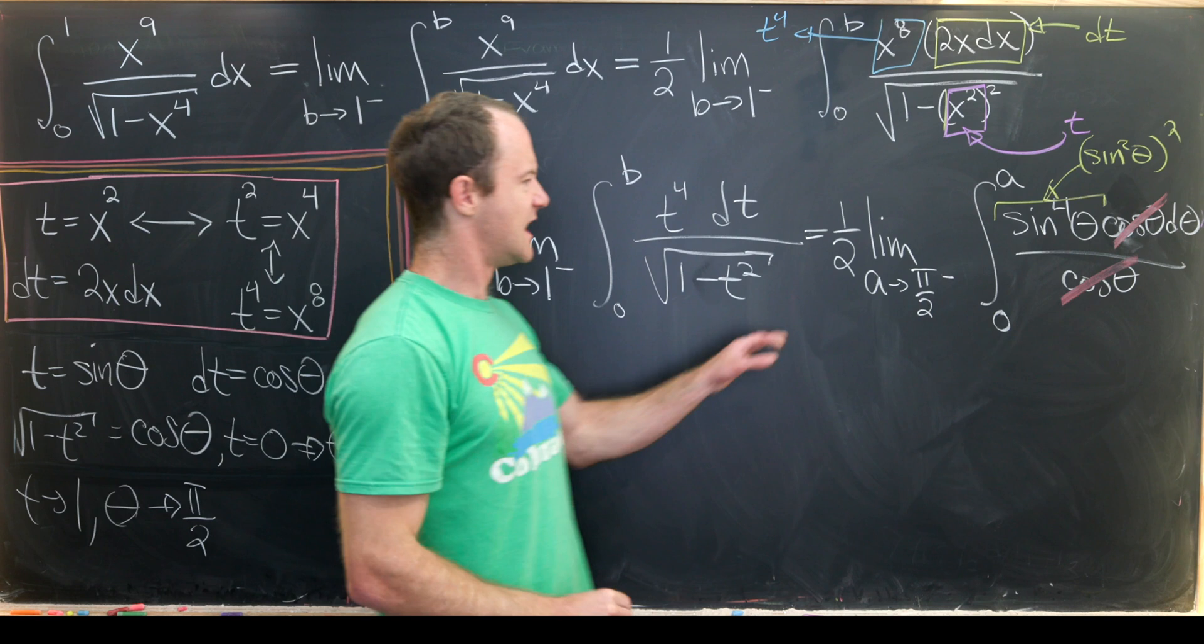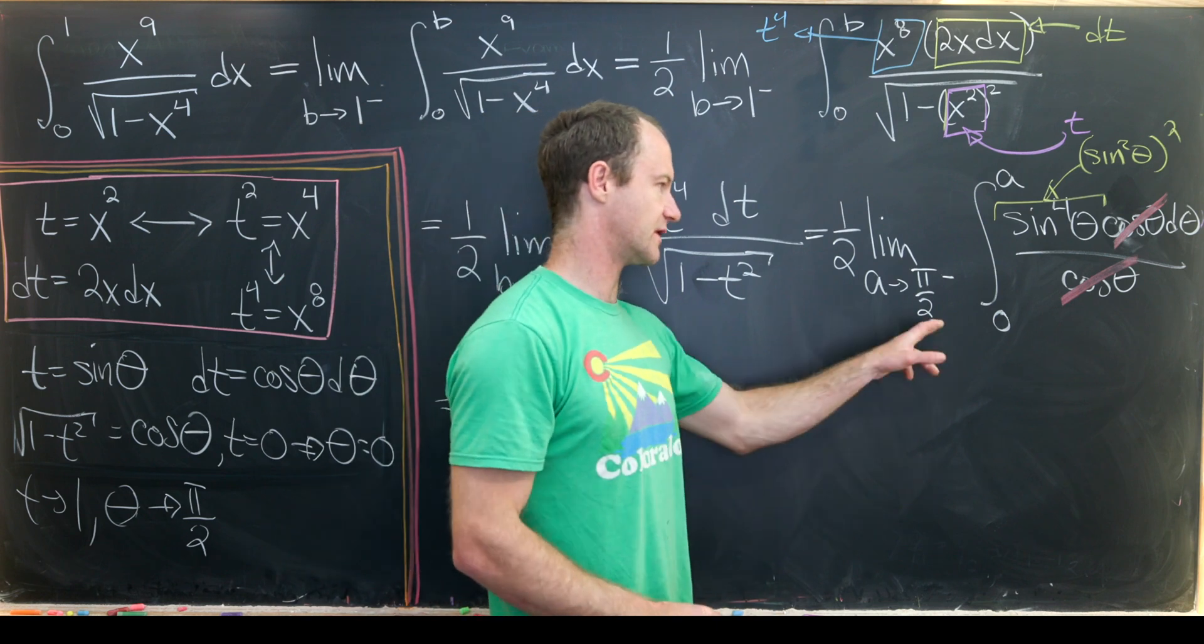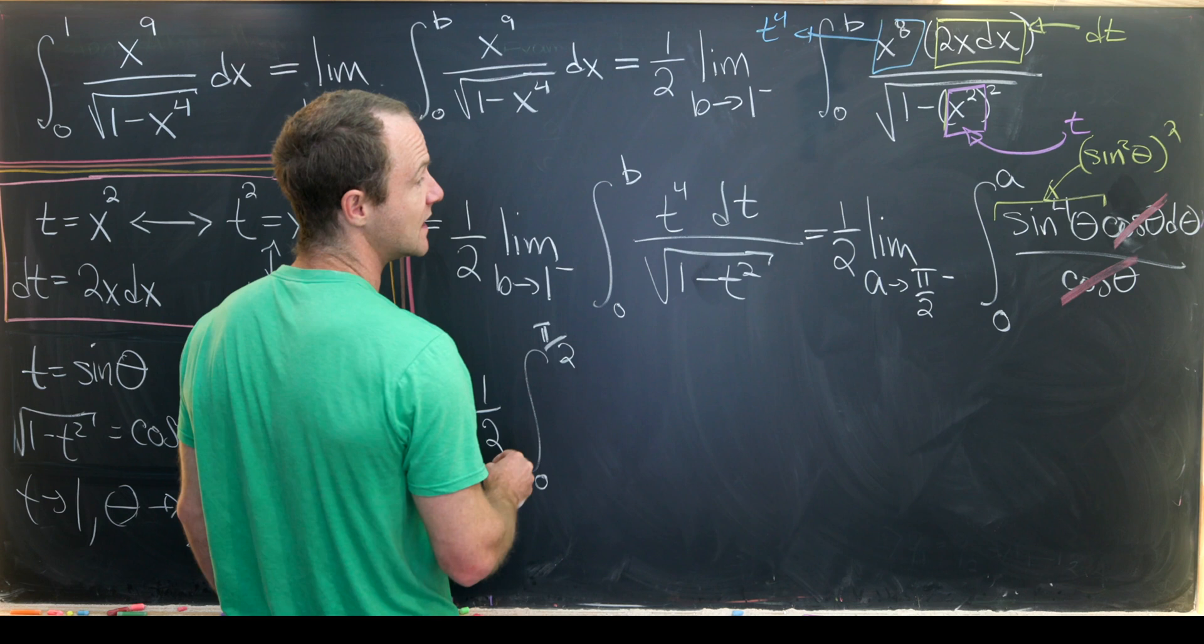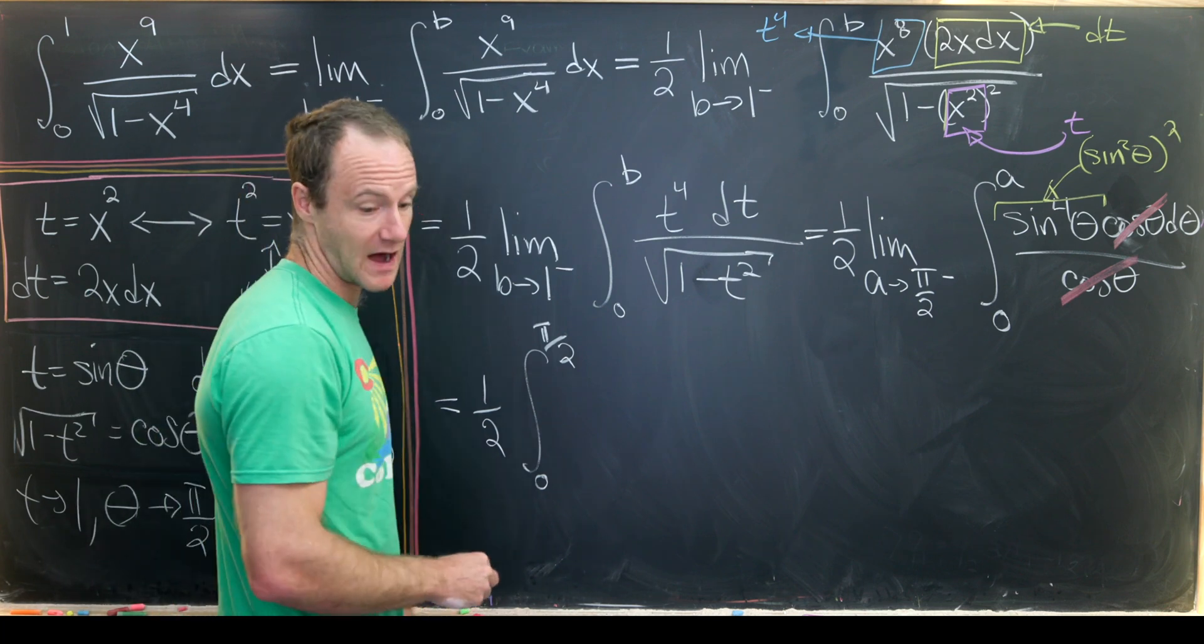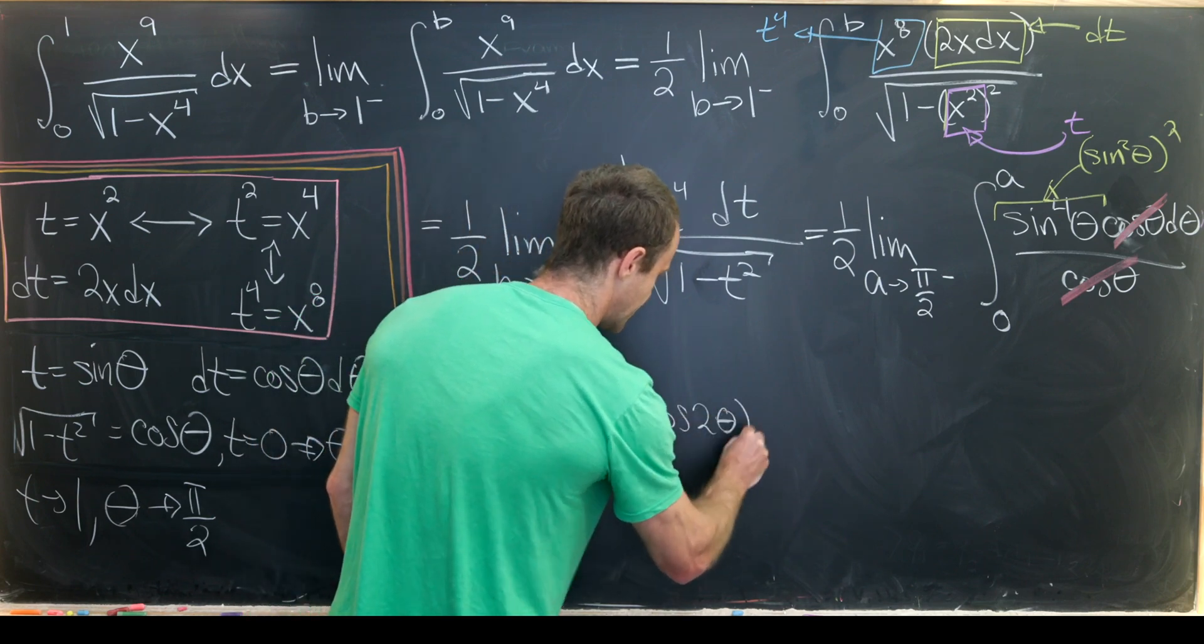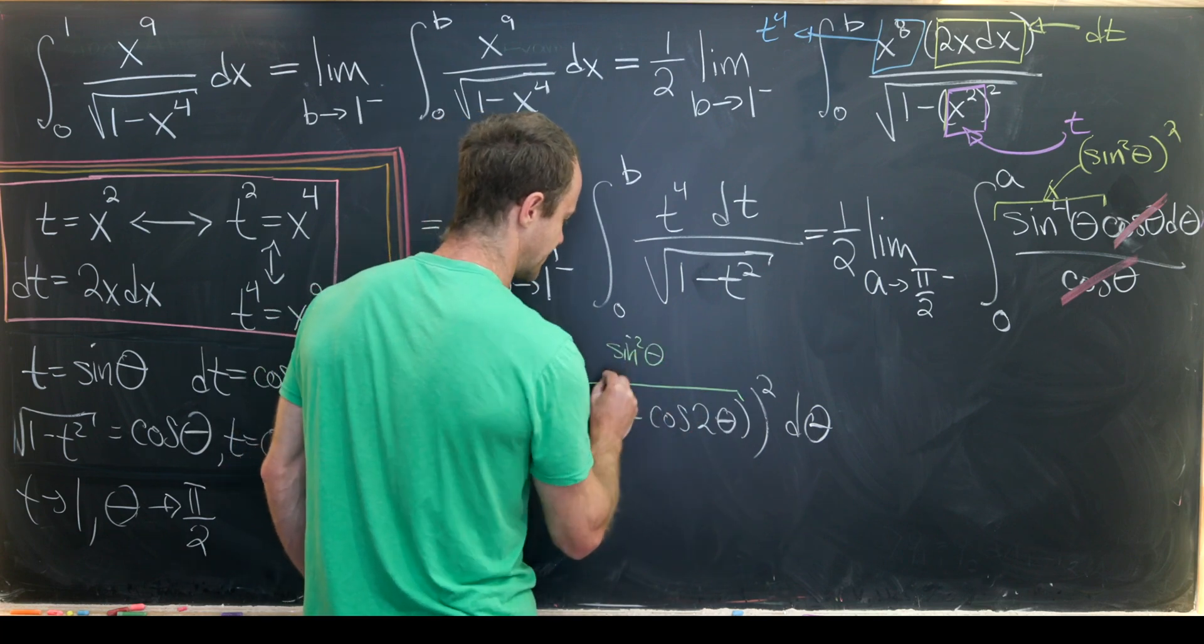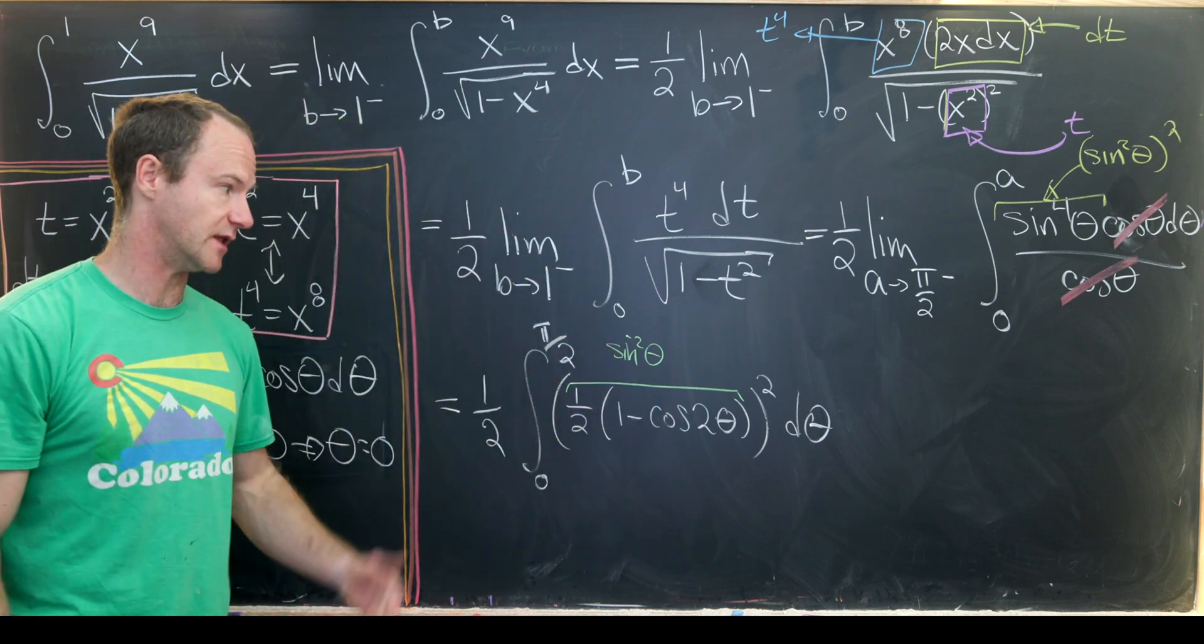This is 1/2, and because of the cancellation, we no longer have an improper integral. We can just plug in π/2. We have 1/2 times the integral from 0 to π/2 of... sin² can be reduced to 1/2(1 - cos(2θ)). So we have [1/2(1 - cos(2θ))]², using the power reducing formula.